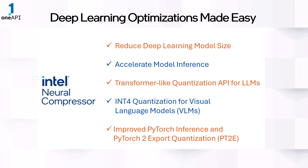The Intel Neural Compressor, which helps reduce deep learning model size and accelerate inference, now comes with a transformer-like API for LLMs and enables int4 quantization for visual language models or VLMs. Other optimizations to the tool allow faster PyTorch inference and quantization.